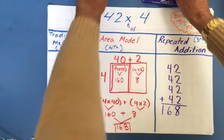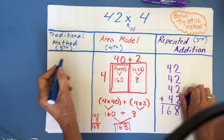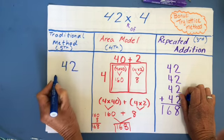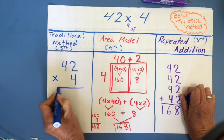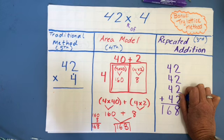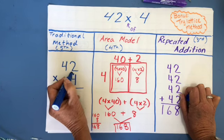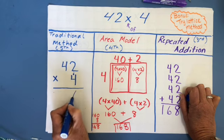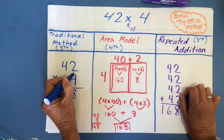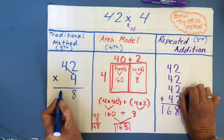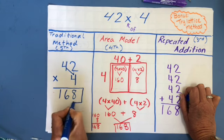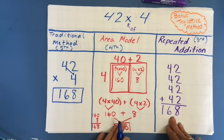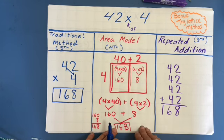The last method is the traditional method, and it works on an algorithm. Here's the problem: 42 times 4. In this method, you start with the ones place and multiply 4 times 2 first, which is 8. Now I'm finished with the ones place and go to the tens place: 4 times 4 is 16. You can see why this is the traditional method — it's just an algorithm. We solved it way faster with this method, but the other two are easier to understand visually.